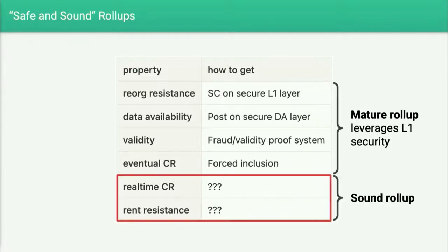But really we want a sound rollup. We don't just want the security inherited from L1. We also want some other properties — initially I was going to call them economic fairness properties, but fairness is a loaded term, so maybe I'll call them economic equity. Essentially, one property is real-time censorship resistance, and the other one is rent resistance.